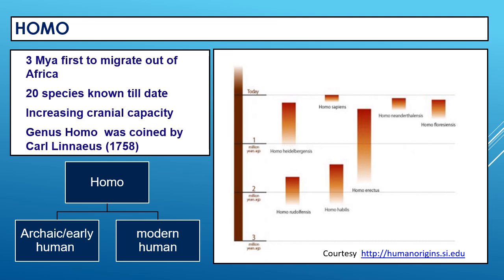Members of genus Homo arose about 3 million years ago and were the first in the human lineage to migrate out of Africa. Till now 20 species of Homo have been discovered, and one of the important features among them is increasing cranial capacity. The genus Homo was coined by Carolus Linnaeus. Members of Homo can be divided into two groups — the earlier or archaic humans and the modern human — and different species of Homo co-existed or lived simultaneously, overlapping in time frame.